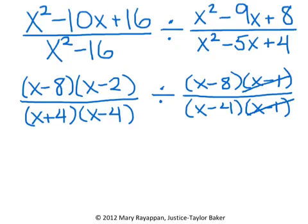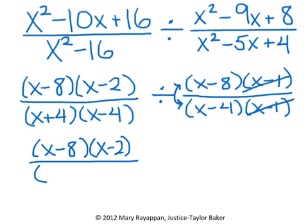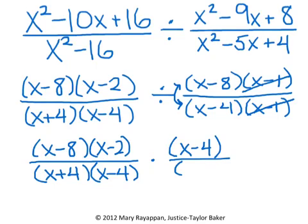Now we're going to go ahead and deal with the division. Remember, for dividing either fractions or rational expressions like this, what we're going to want to do is flip the second one and then multiply. So our first rational is going to stay exactly the same: x minus 8 times x minus 2 over x plus 4 times x minus 4. Nothing changes. Now we're going to multiply the reciprocal of the second, which means we're going to take that second one and flip it so that it is x minus 4 over x minus 8.